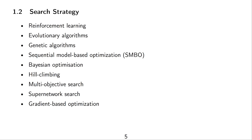Let us go over the list of search strategies. This list is not exhaustive — these are just some of the search strategies that have been proposed: reinforcement learning, evolutionary algorithms, genetic algorithms, sequential model-based optimization, Bayesian optimization, hill climbing, multi-objective search, super network search, and gradient-based optimization. We will see a few selected examples.